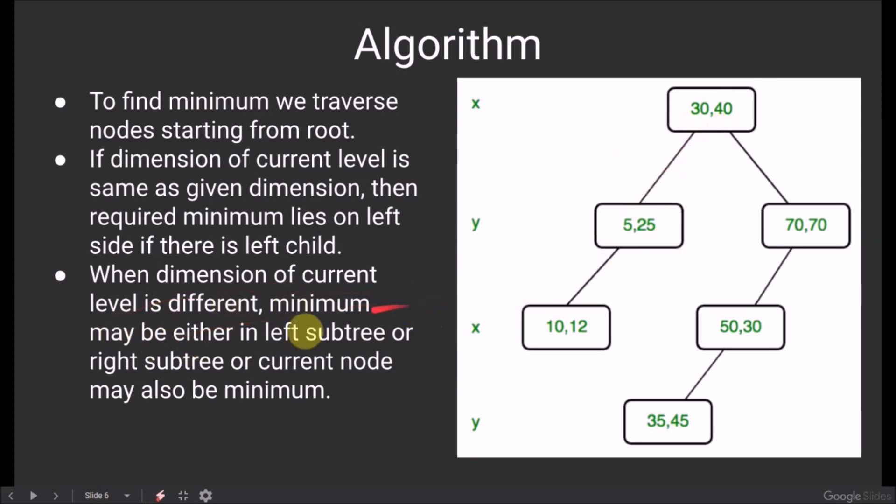When dimension of current level is different, minimum may either be in the left subtree or the right subtree, or current node may also be minimum. Now at this node, the value of dimension is y, and the required dimension is x. Therefore, the dimensions are different. So the required minimum dimension can either be in this node, or its left node, or its right node if it exists. So we have to find out the minimum of all these three nodes. We will use recursion to carry out this procedure.